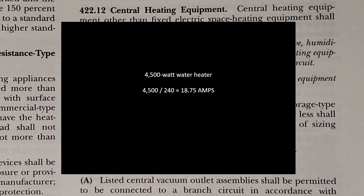A lot of people might think they can just go size their wire and breaker off this value, but that's not true. According to this code, we must take that value and multiply it by 1.25. That is increasing the value by 25%. Then we're going to size our wire and our overcurrent protection.